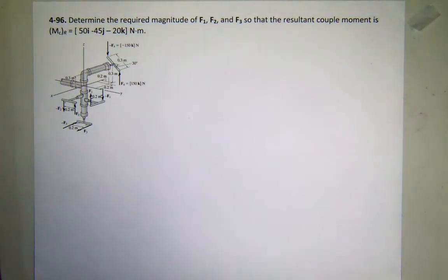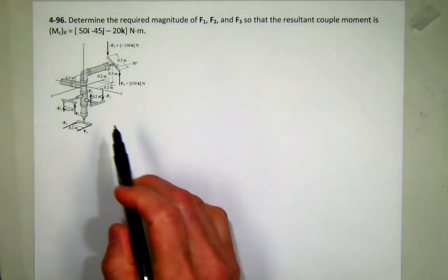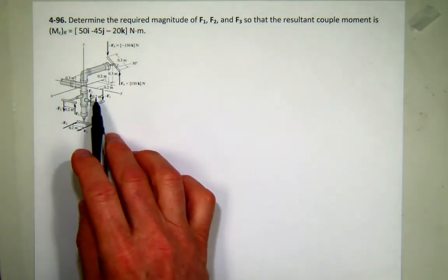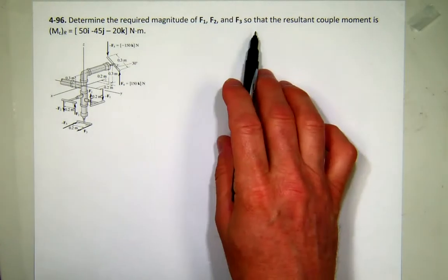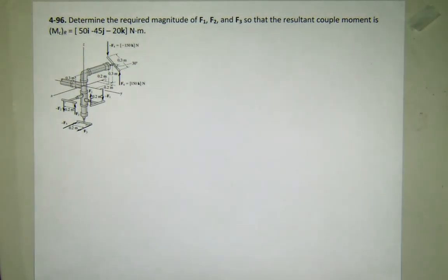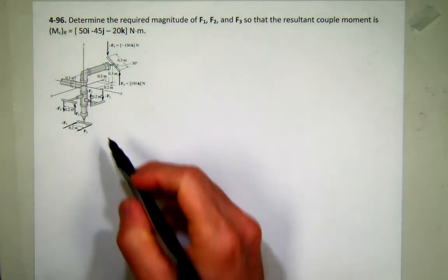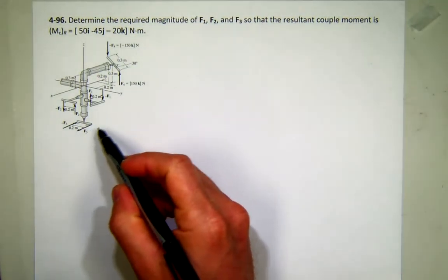Okay, let's see if we can work this problem. It's similar to one we had in homework, a little bit different. The magnitude of these vectors F1, F2, and F3 are unknown, and we want to find those values so that the resultant of all of these is equal to this value.